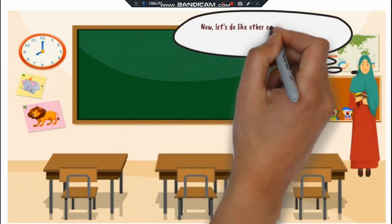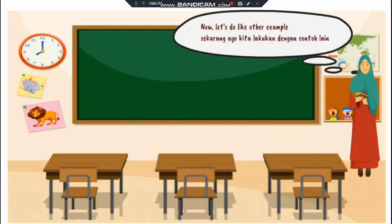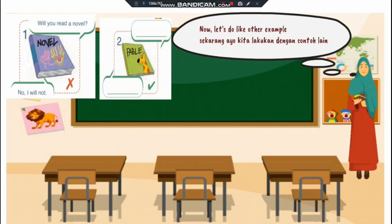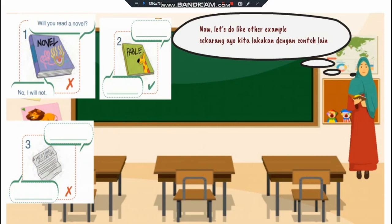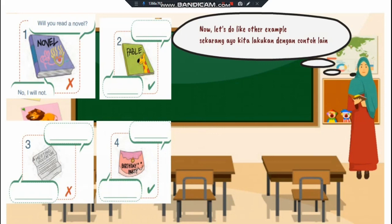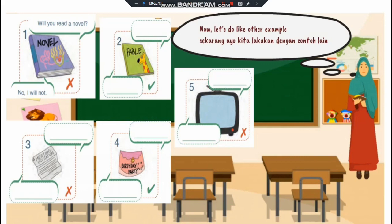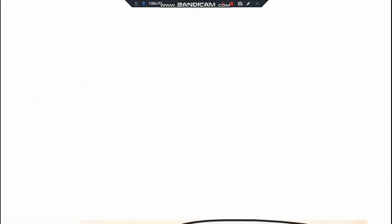Now, let's do like another example. Sekarang, ayo kita lakukan dengan contoh lain. Number one: will you read a novel? Maukah kamu membaca novel? No, I will not. Tidak. Number two: read pamphlet. Number three: meeting invitation. Undangan rapat. Number four: birthday party. Undangan pesta ulang tahun. Number five: watch television. Ada tanda cross. Number six: sweep.